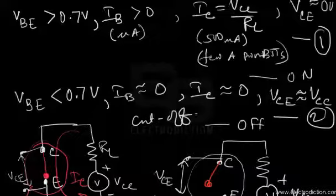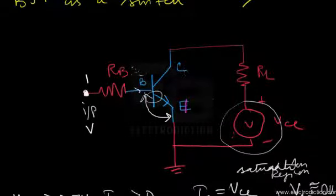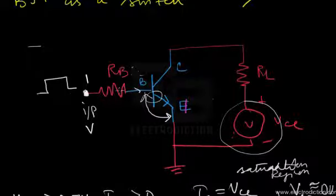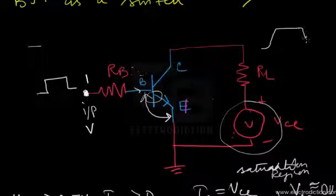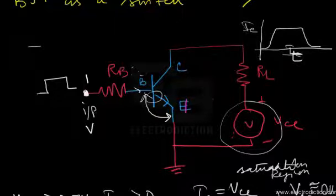Such applications of the BJT as a switch are quite common in digital and computer circuits. In those circuits, input pulses are applied to the base terminal in order to switch the transistor on and off. Corresponding to an input pulse, the collector current takes some time to rise and fall, producing a waveform of IC with respect to time.